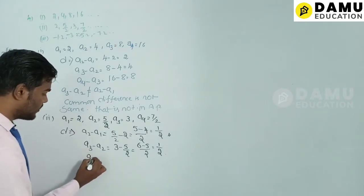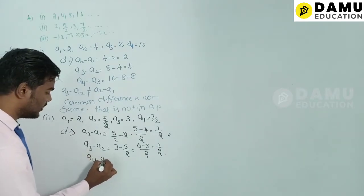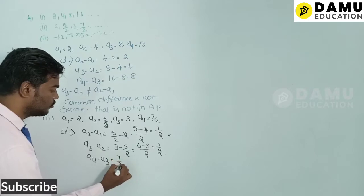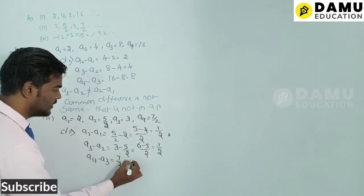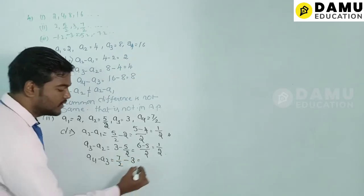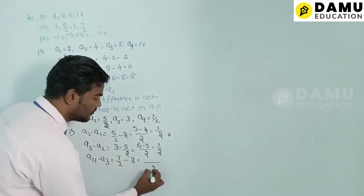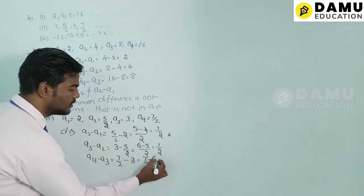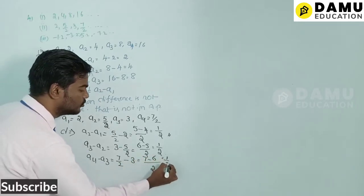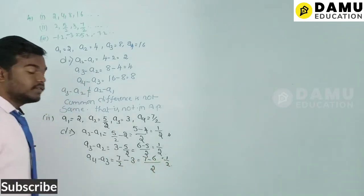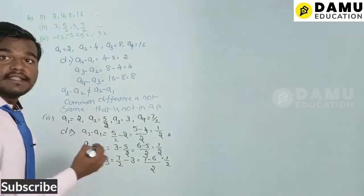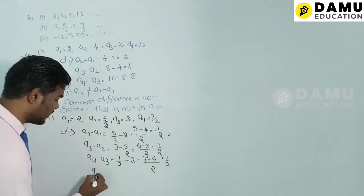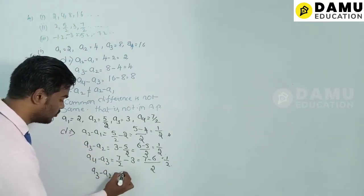Then a4 − a3 = 7/2 − 3. Taking LCM: (7 − 6)/2 = 1/2. The common difference is the same, so the given series is in AP.